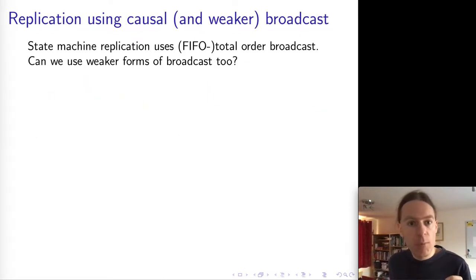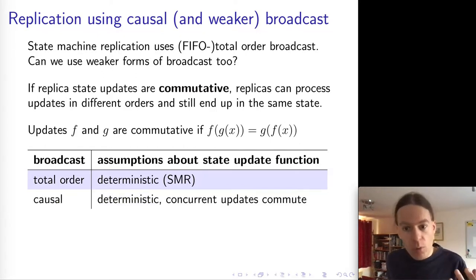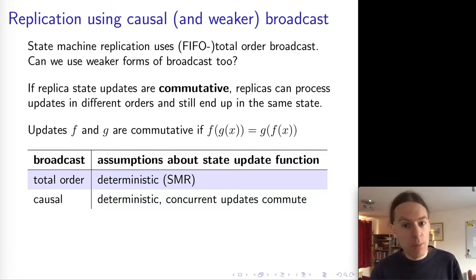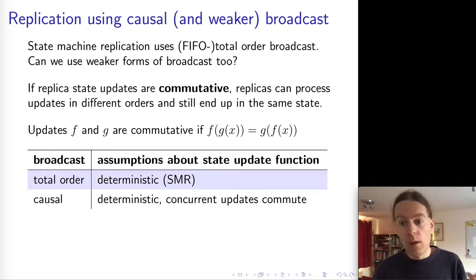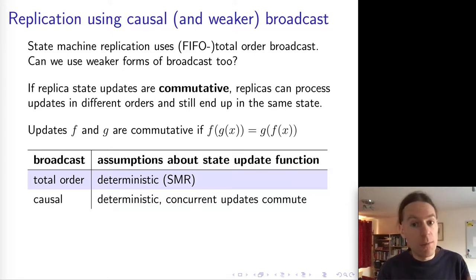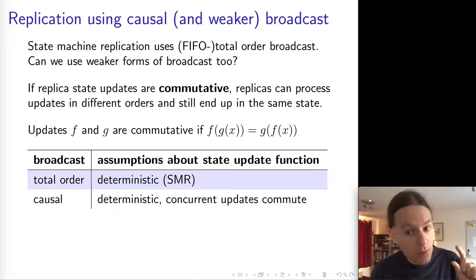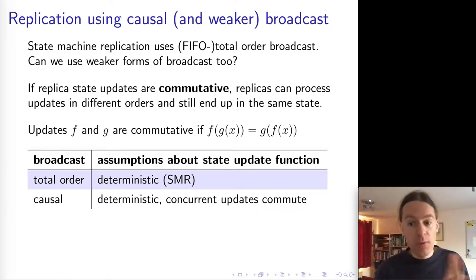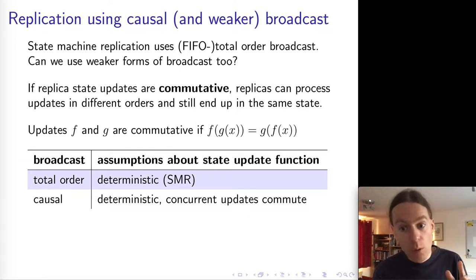If updates are commutative, we can use causal broadcast. Processing an update must still be deterministic — that remains a requirement of any broadcast-based replication model. Causal broadcast guarantees that if one message happened before another, they are delivered in happens-before order, but two concurrent messages might be delivered in either order. So to ensure all replicas end up in the same state, any two concurrent updates must have commutative state update functions. Non-commutative updates will be delivered in the right order by causal broadcast, and any updates that might be reordered are commutative, so we end up in the same state.